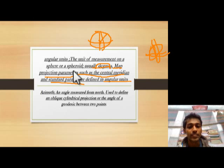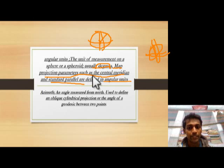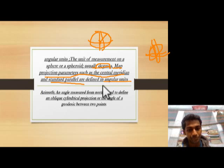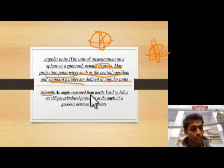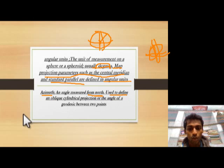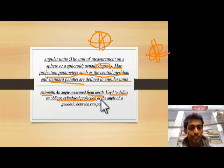We measure spheres which are on a sphere or a spheroid, usually in degrees. Projection parameters such as central meridian and standard parallel are defined in different angular units. Now we discuss azimuth — angle measurement from north — used to define the oblique cylindrical projection.